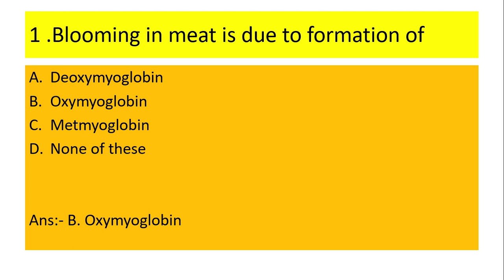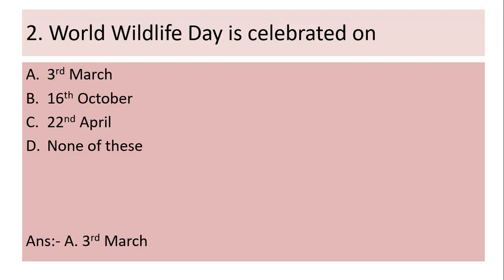First question: Blooming in meat is due to the formation of — (a) deoxymyoglobin, (b) oxymyoglobin, (c) metmyoglobin, (d) none of these. Answer is (b) oxymyoglobin. Second question: World Wildlife Day is celebrated on — (a) 3rd March, (b) 16th October, (c) 22nd April, (d) none of these. Answer is (a) 3rd March.